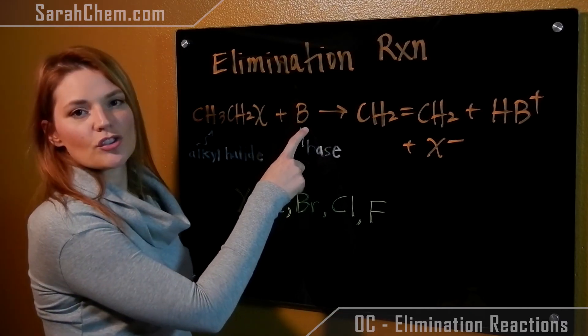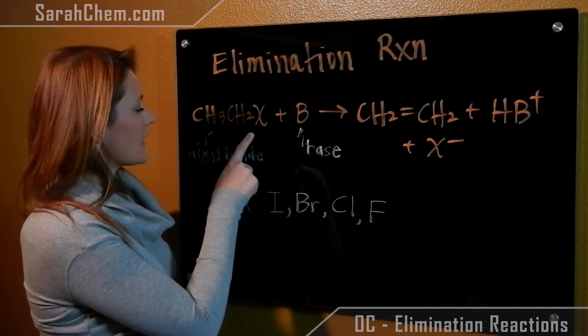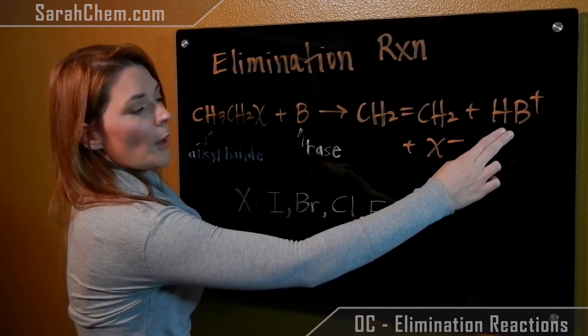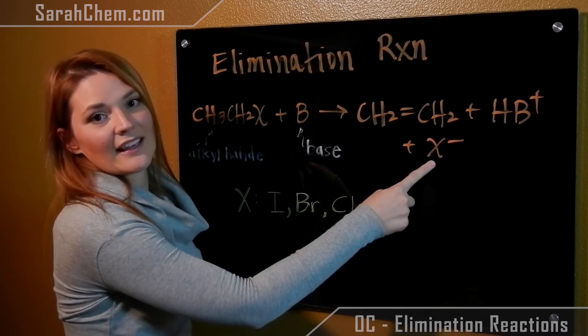And the base, which I'll just represent by B, comes in and it attacks your alkyl halide, forming an alkene, a protonated base, and the halide anion.